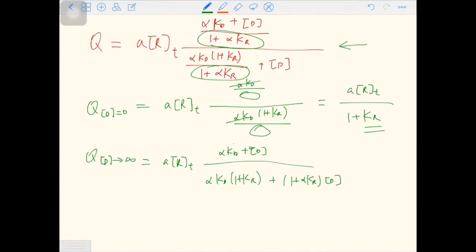So when D approaches positive infinity, this part will be negligible. So we can consider this zero. Also, this part will be zero when D approaches infinity. And the coefficient of D on the top is 1, and on the bottom is 1 plus alpha KR.